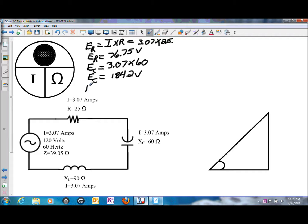And then the last component, the voltage drop on the inductor. I times the ohm value again, 3.07 amps of current flow times 90 ohms of inductive reactance. That will give us an inductive voltage drop of 276.3 volts.